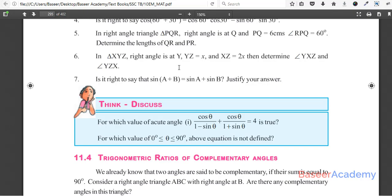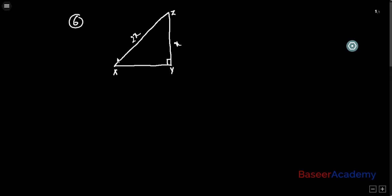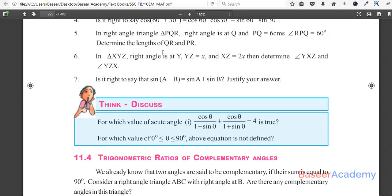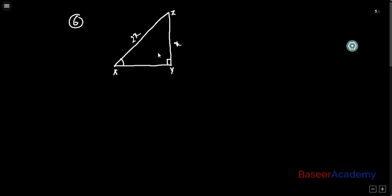Determine angle YXZ. Angle YXZ is this angle. So we have to find out that angle and then angle YZX, which is this angle. Finding out these two angles is very easy.